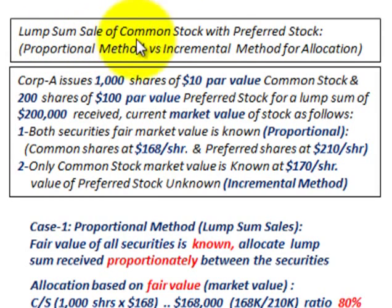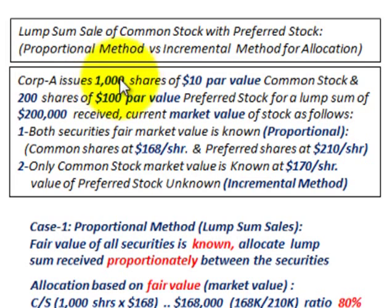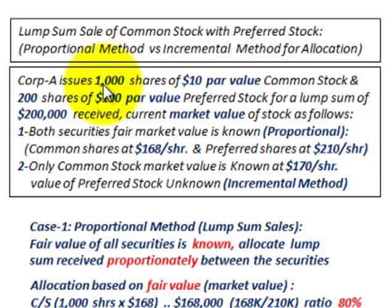We're going to be looking at a lump sum sale of common stock with preferred stock, comparing the proportional method versus the incremental method for allocating this sale. For example, Corporation A issues 1,000 shares of $10 par value common stock and 200 shares of $100 par value preferred stock for a lump sum price of $200,000. The customer receives both sets of shares, so we need to look at the current market value of the stocks across two different cases.